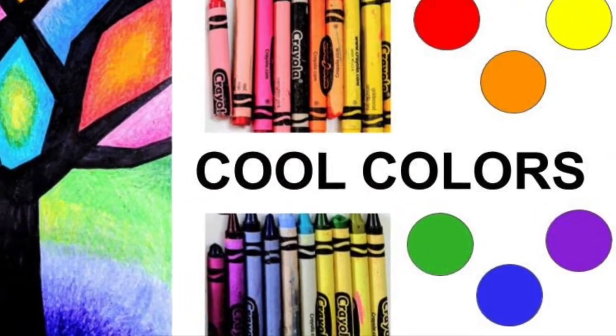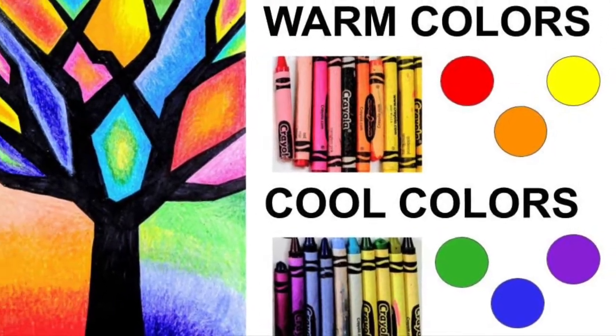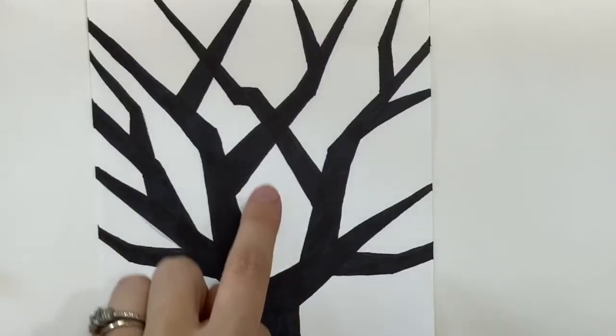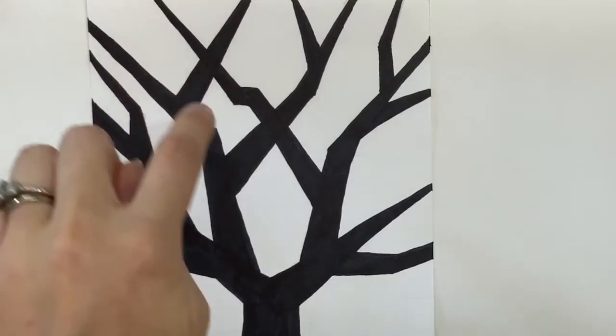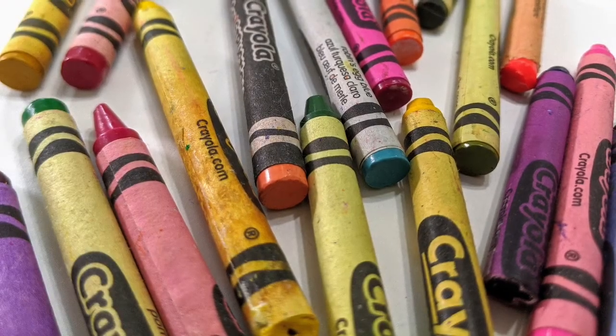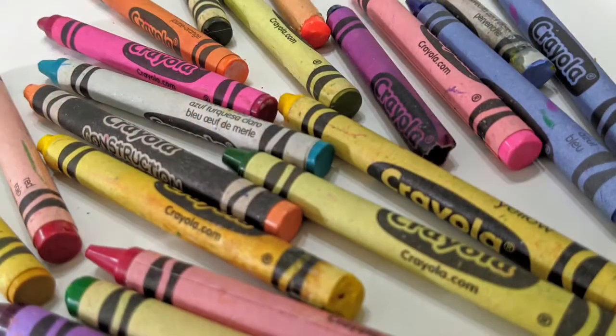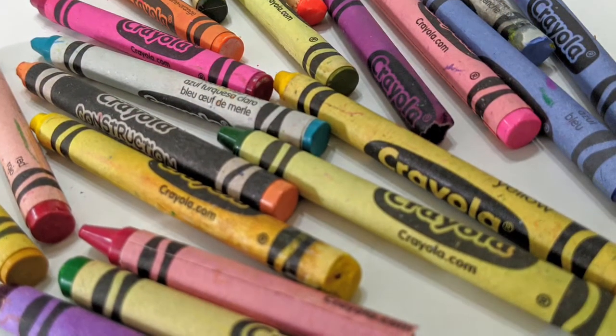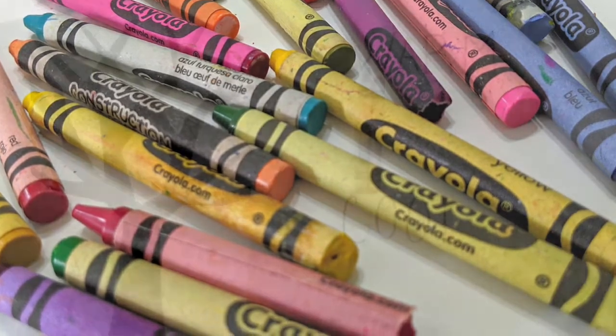When we color today we will be coloring in the white areas of negative space using warm with warm colors and cool with cool colors. Now let's stop and think what are some warm with warm or cool with cool color combinations that you could use.